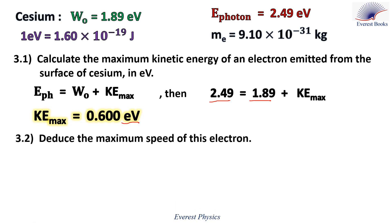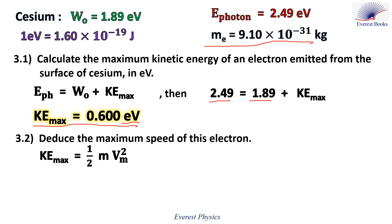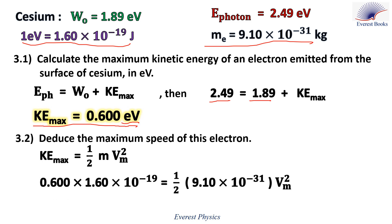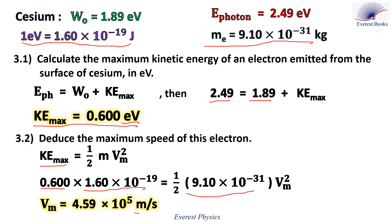Part 3.2: deduce the maximum speed of this electron. The kinetic energy of the electron is given by the expression one-half mv squared. Be careful with units: the mass is expressed in kilograms, whereas the maximum kinetic energy is in electron volts, so we convert to joules: 0.600 times 1.60 times 10 to the power minus 19 joules. Then the maximum speed of the electron is 4.59 times 10 to the power 5 meters per second.